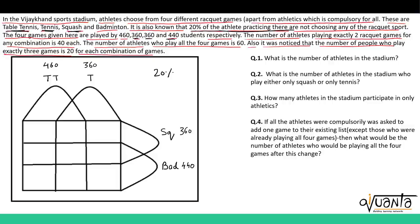Everything was given in the question. We were given that the number of athletes playing exactly 2 racket games for any combination is 40 each. Let us find out the areas which denote exactly 2 — this area, this area, this area, this box, this box and this box. Each area of exactly 2 is 40, so let us write 40 in all these areas: 40, 40, 40, 40, 40 and 40.